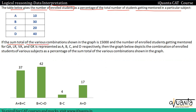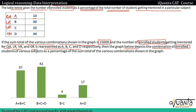If the sum total of the various combinations shown in the graph is 15,000, and the number of enrolled students getting mentored for QA, LR, VA, and GK is represented as a, b, c, and d respectively. So we have a, b, c, d — that is QA, LR, VA, and GK — number of enrolled students. The graph depicts the combination of enrolled students for various subjects as a percentage of the sum total.